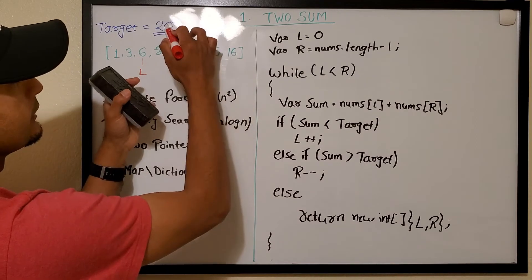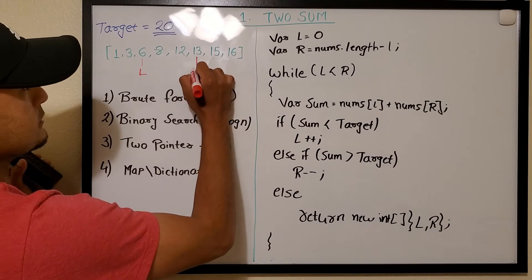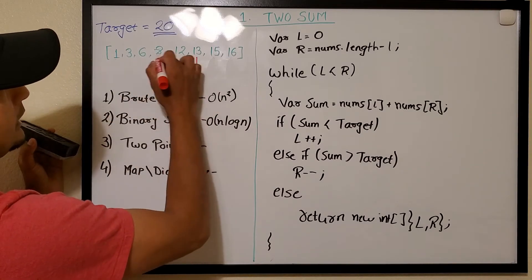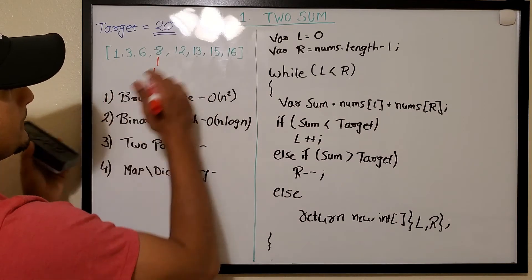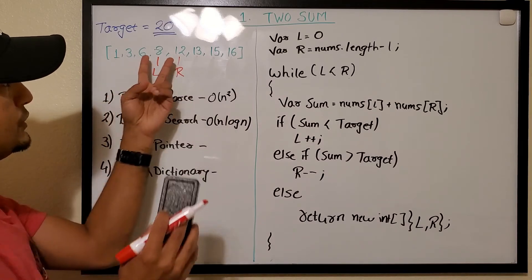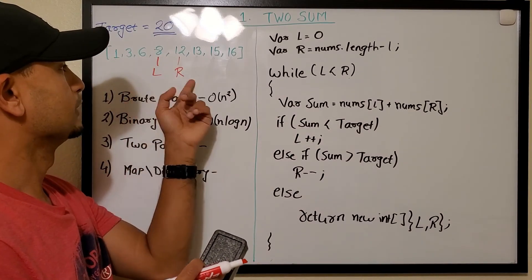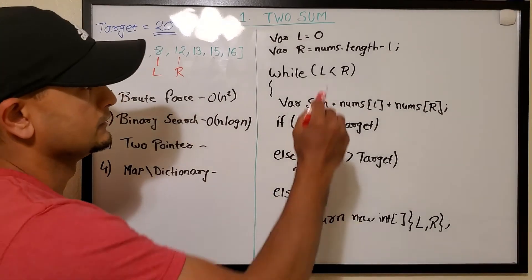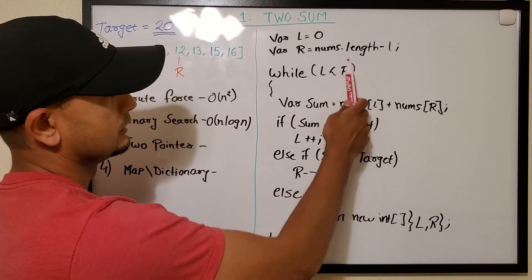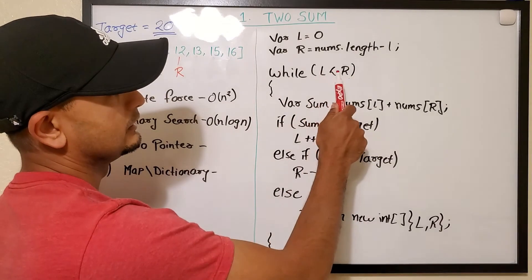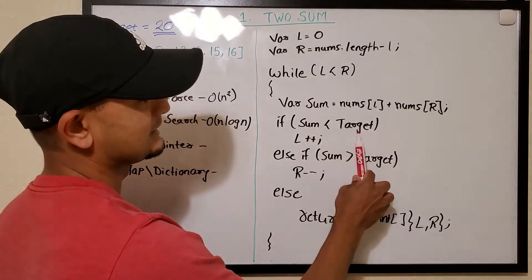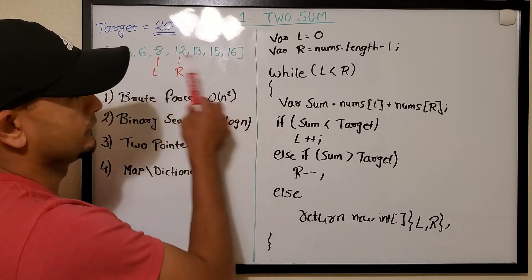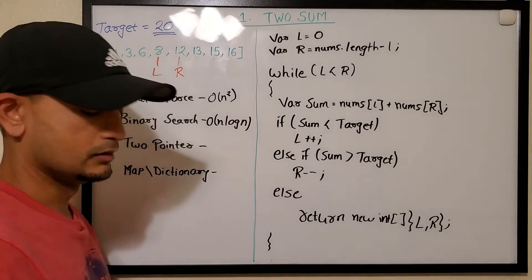Continuing the two pointer walkthrough: 15 plus 6 is 21, still greater, move right. 13 plus 6 is 19, less than 20, move left. 13 plus 8 is 21, greater, move right. Eventually left and right point to 8 and 12, summing to 20. The algorithm: l=0, r=length-1, while l < r — if sum < target, l++; if sum > target, r--; if sum equals target, return the values.